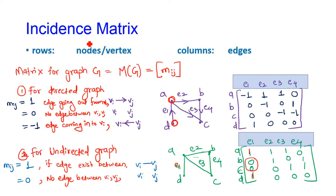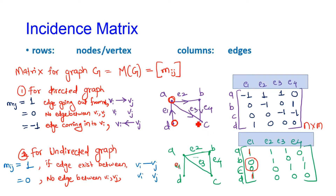The first representation is the incidence matrix. As the name suggests, whatever graph you are having will be represented in matrix format. A matrix will have n number of rows and m number of columns. For example, if I am having this kind of graph, whatever vertices I am having — a, b, c, d — those will be my rows, and whatever edges I am having in this graph will be treated as columns.